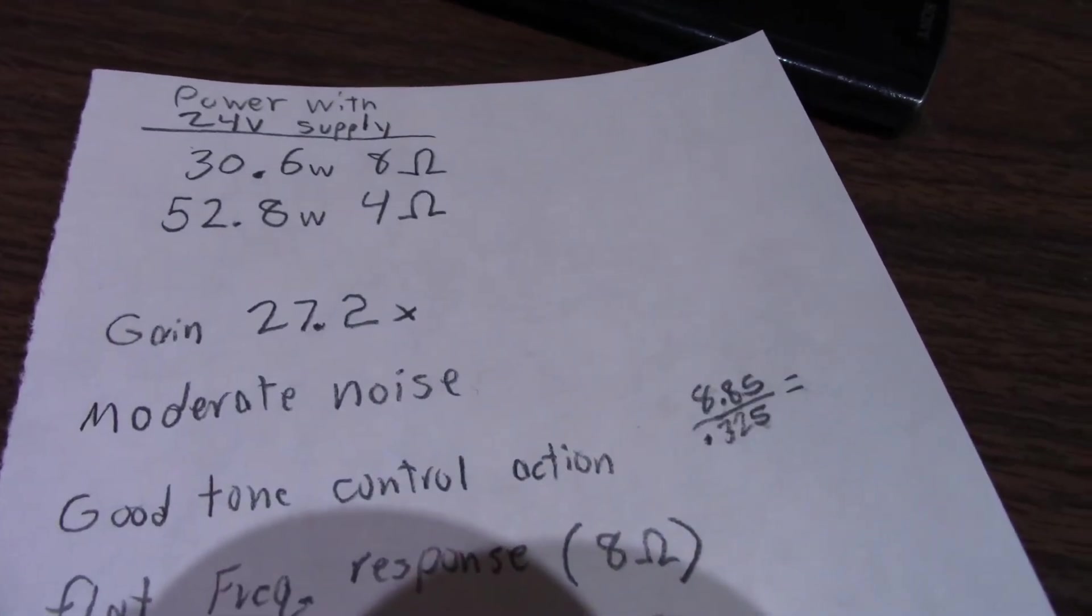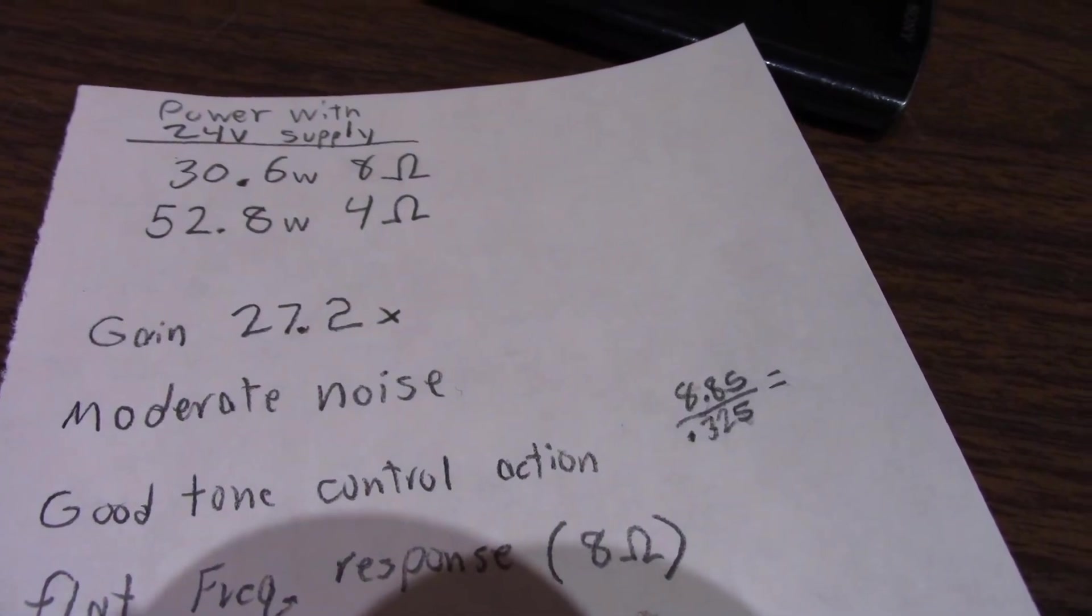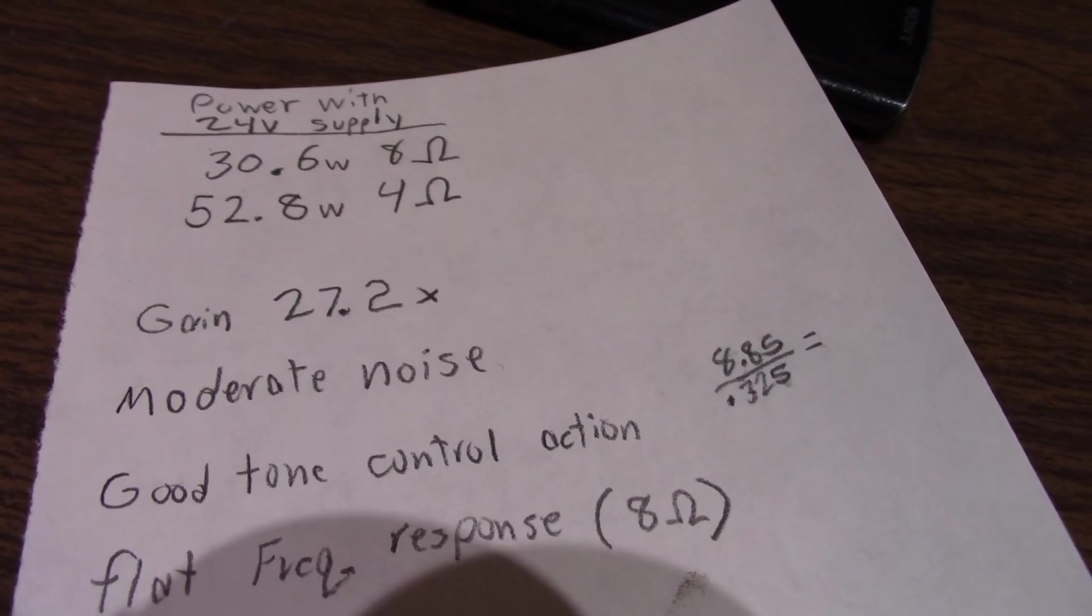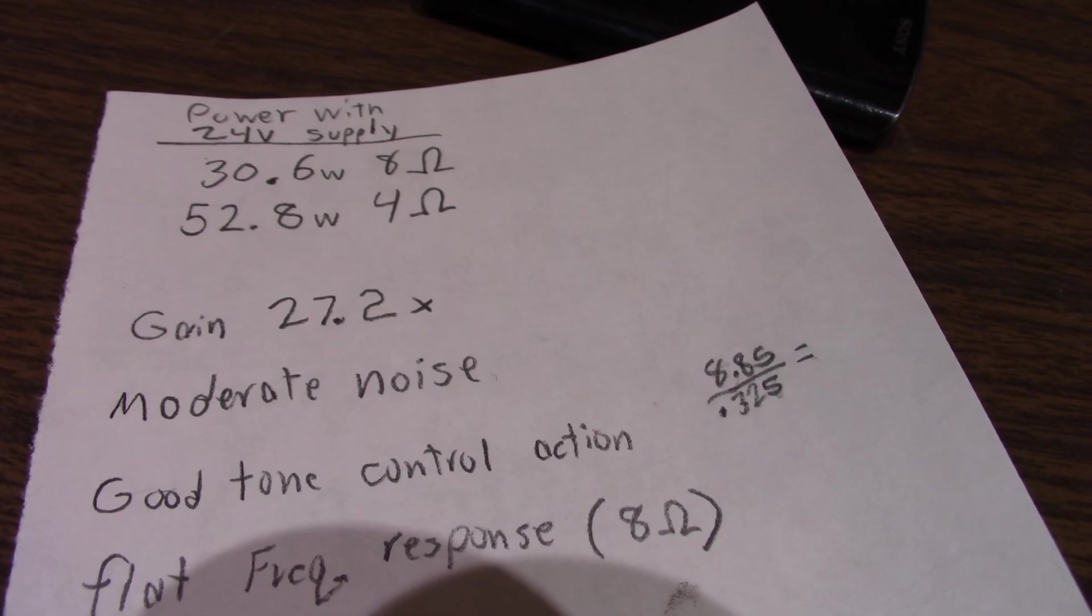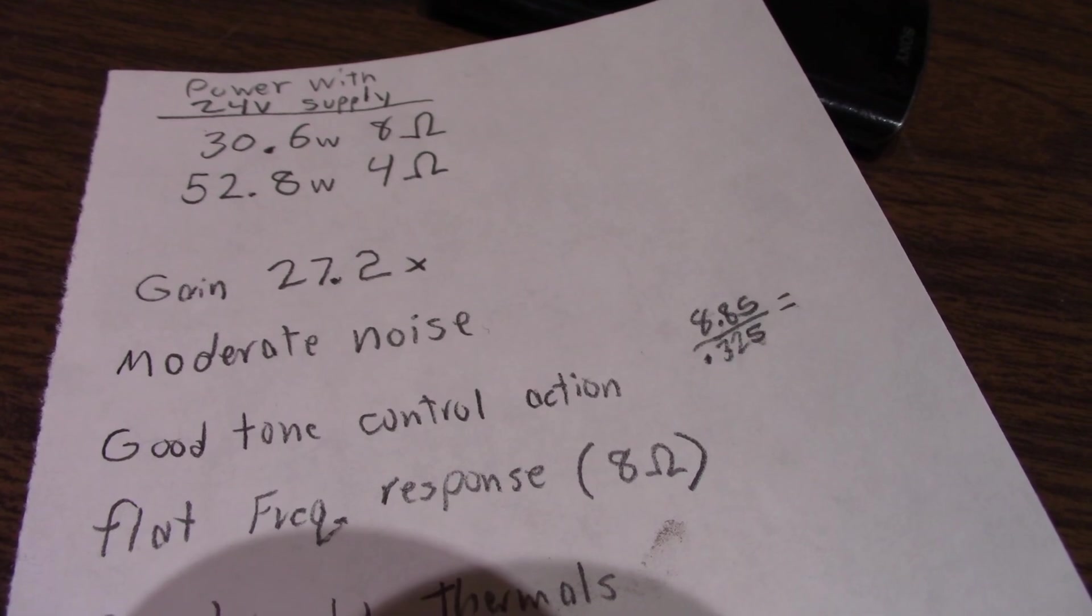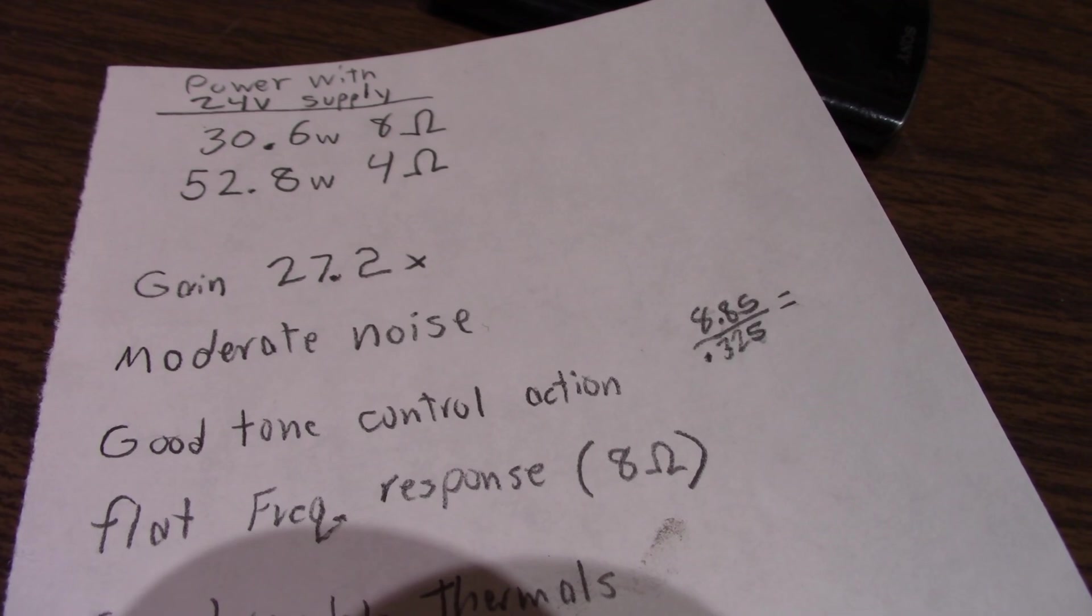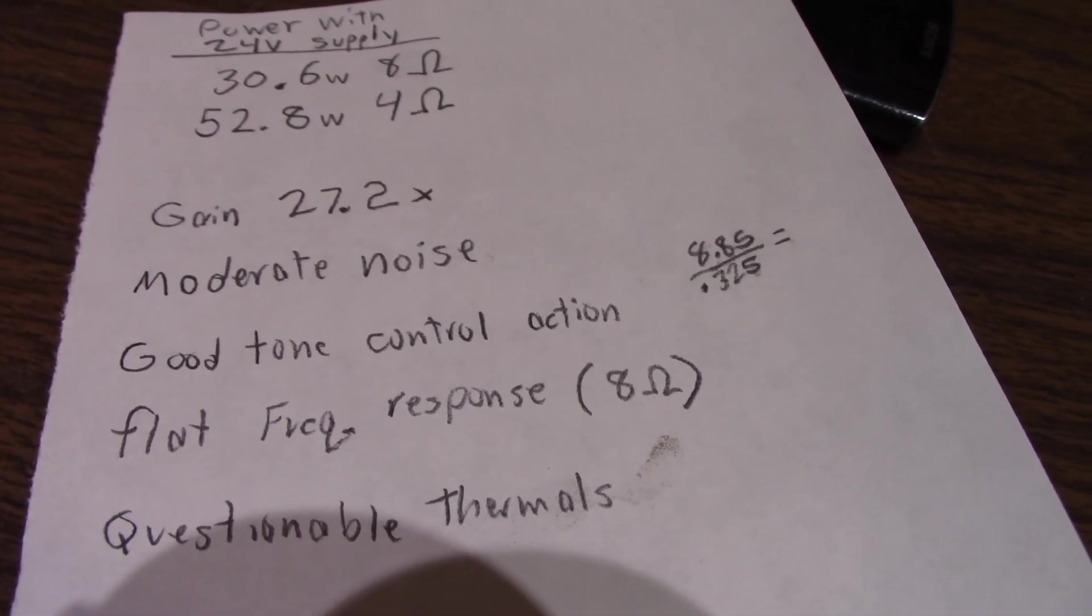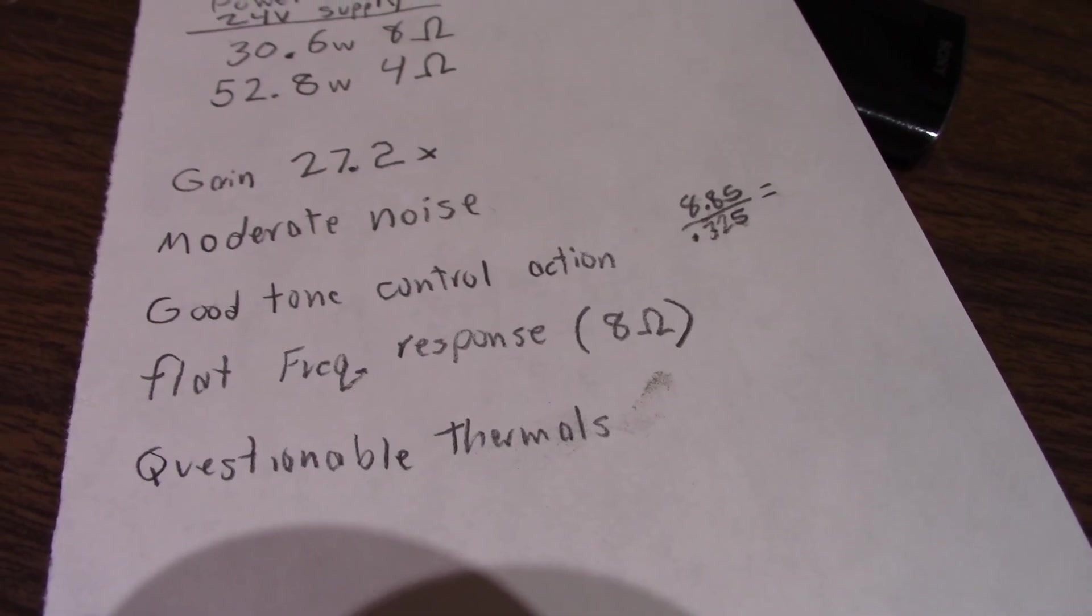Okay, so once again, measured the power to be 30.6 watts at 8 ohms, 52.8 at 4 ohms. Very typical with 24 volt supply with these bridge type class D amplifiers. Measured the gain at 27.2 times and I take that measurement with the volume all the way up and measure the output voltage versus the input voltage. And as I mentioned, noise is kind of moderate. You know, just the background hiss is not as low as some of the others and it's not as bad as some amplifiers. I think it's pretty much a non-issue when listening to music. Though if you have ultra-sensitive speakers, you might notice background hiss when the amplifier is sitting idle. I like the tone control action. It doesn't affect the mid-range around 1 kHz. That's what that one test was all about. Flat frequency response at 8 ohms.